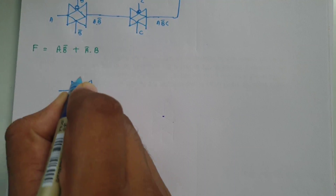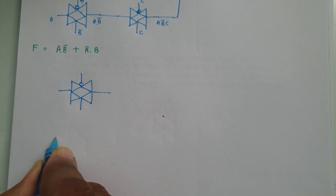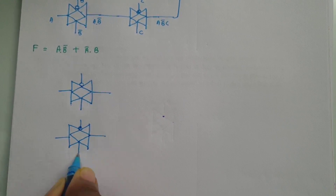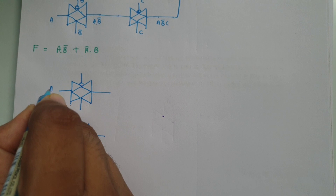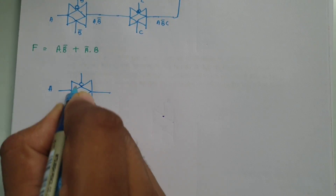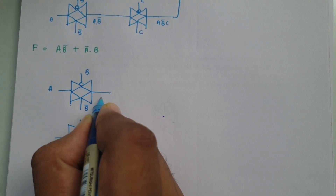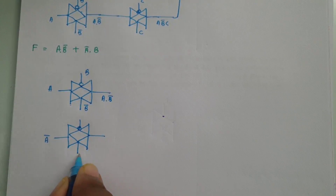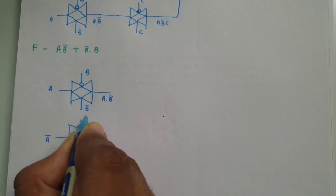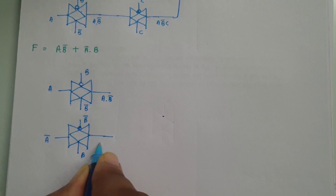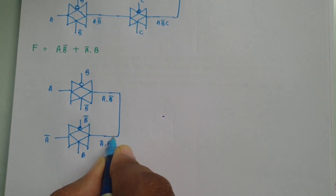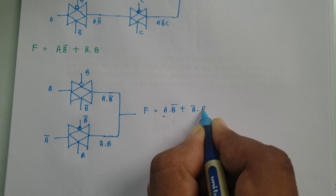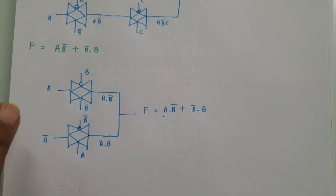This is the first transmission gate — here there is a bubble and a straight line for control. This is the second transmission gate, also with a straight line for control. For the first gate, input is a and control is b̄, so the bubble terminal provides b; the output is a·b̄. For the second gate, input is ā and control is b, so the bubble terminal is b̄; the output is ā·b. Connecting these with a wire gives output function f = a·b̄ + ā·b. This is how we form a Boolean function using transmission gates.